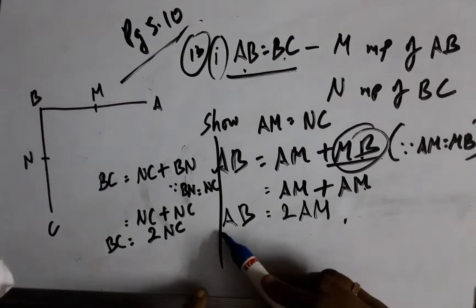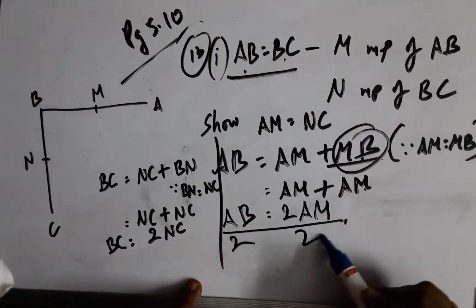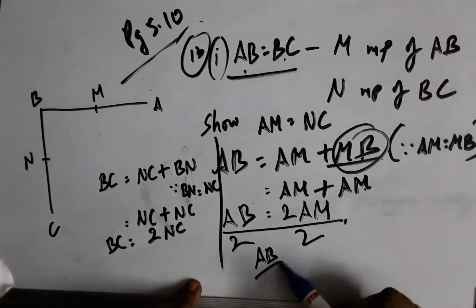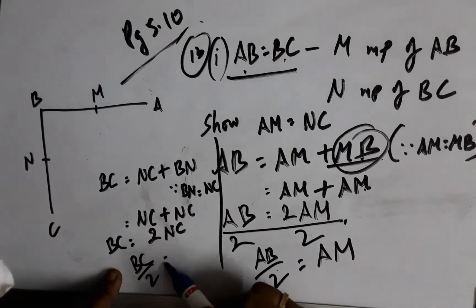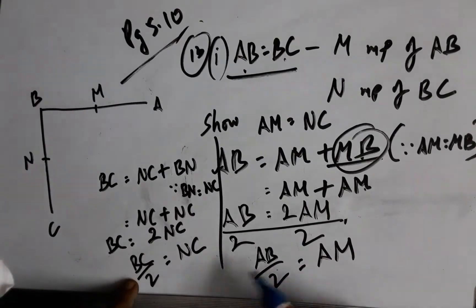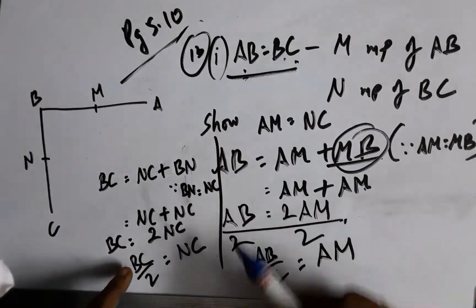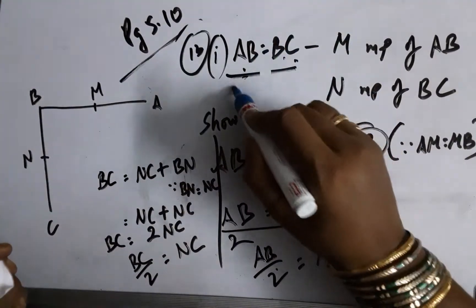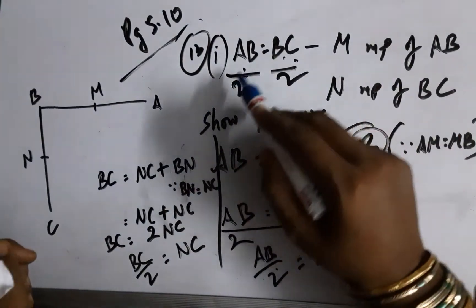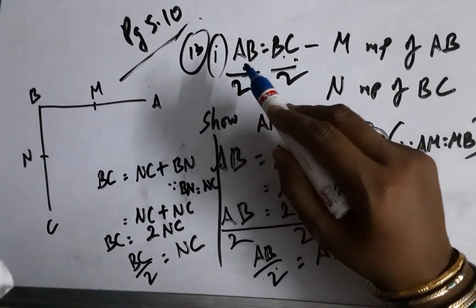If I divide both sides by 2, I will have AB by 2 equals AM and similarly BC by 2 equals NC. But I have AB equals BC already has been given. So the given thing can be divided on both sides by 2.